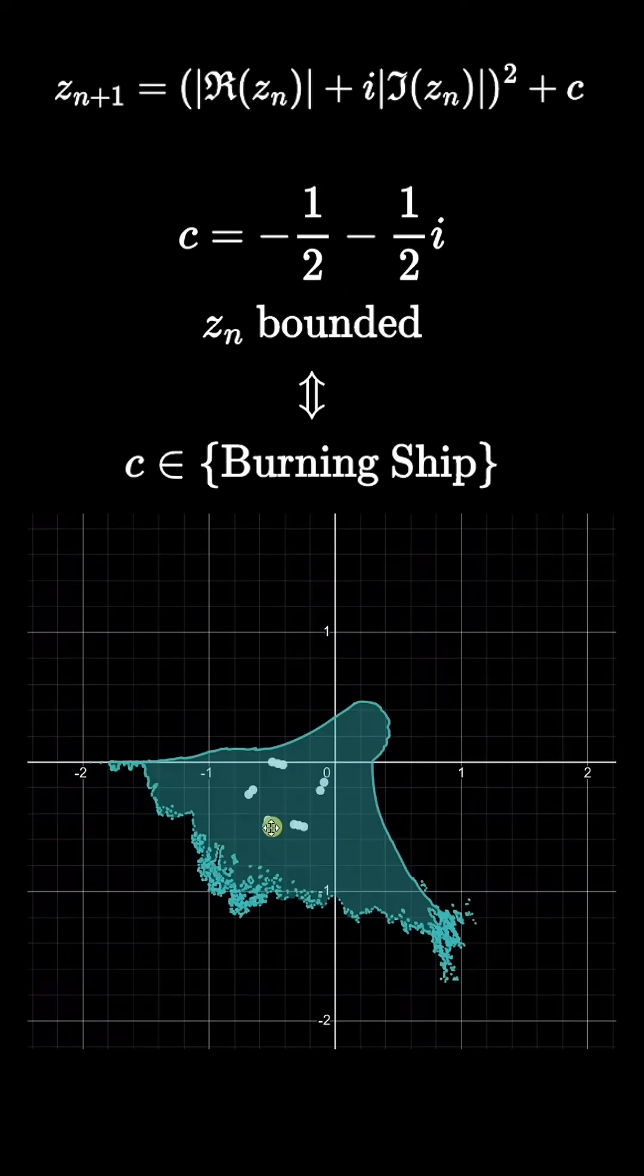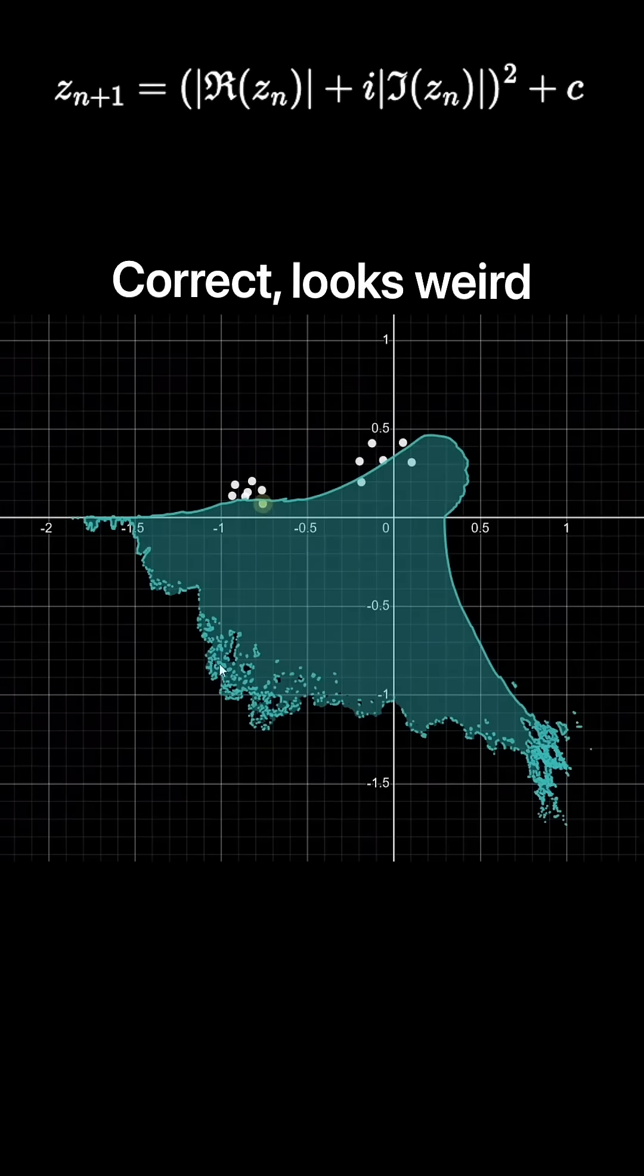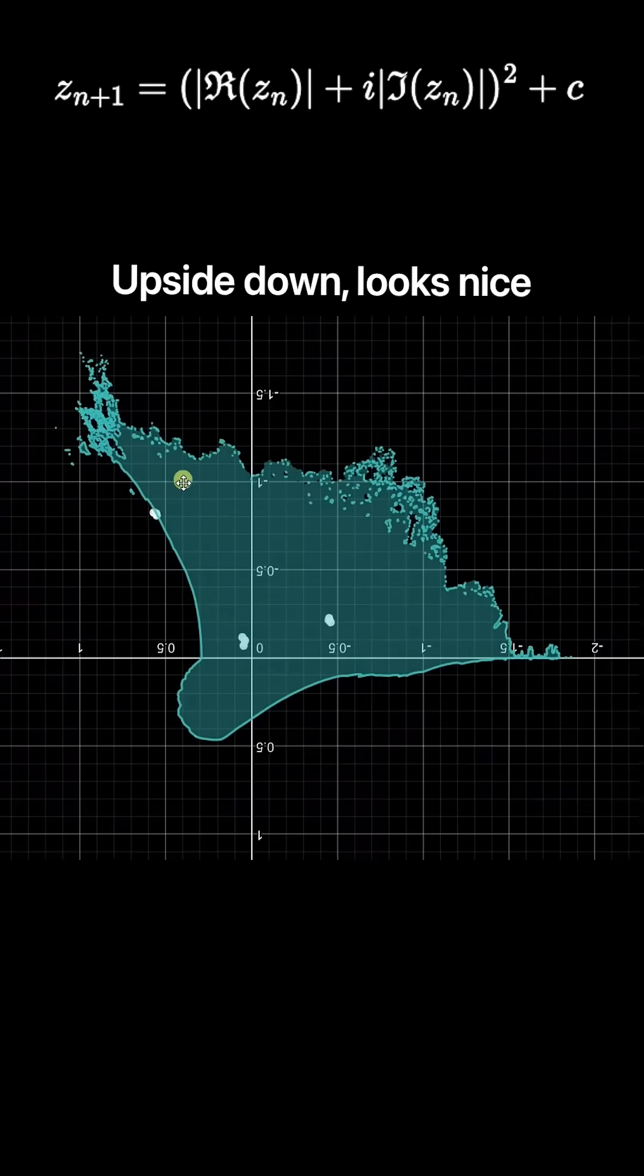But if I instead pick negative one-half minus one-half i, the sequence ends up bounded, so negative one-half minus one-half i is in the set. Note that in a lot of these visualizations, we're flipping the fractal upside down because it looks nicer.